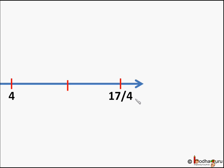Now we take 4 and 17/4 and find its midpoint. So it becomes (4 + 17/4)/2, which is equal to 33/8. So 33/8 is between 4 and 17/4.